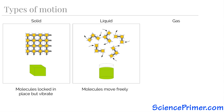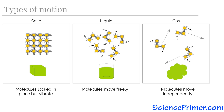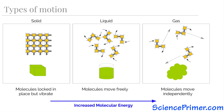Liquids still have a fixed volume, but due to the ability of the molecules to slip past each other, liquids can change shape. Further increase in the thermal energy allows molecules to enter the gas phase. In gas phase, molecules are separated by a lot of space, they move completely independently of each other, and their speed is much greater than it is in liquids. Gases have neither a fixed volume nor a fixed shape. There is more internal kinetic energy associated with the molecules in a substance as it transitions from solid to liquid and from liquid to gas.